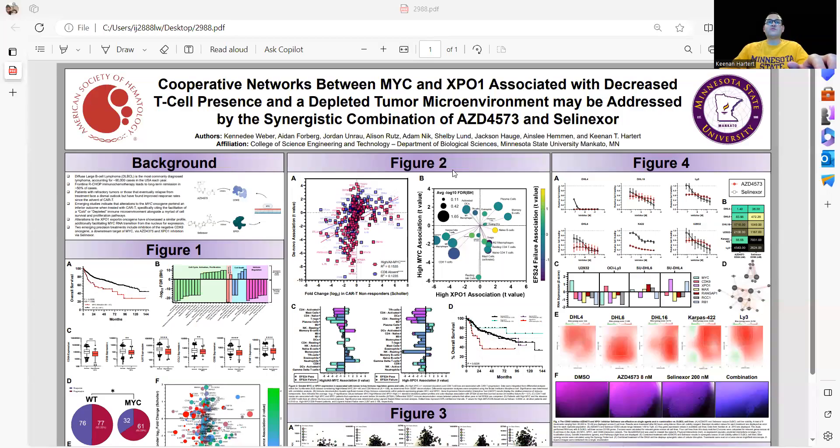Hi everyone, and welcome to Poster 2988 for the ASH 2023 meeting. My name is Kenan Harder. I'm the corresponding author on this titled Cooperative Network between MYC and XPO1 associated with decreased T-cell presence and depleted tumor microenvironment may be addressed by the synergistic combination of AZD4573 and Selenexor.